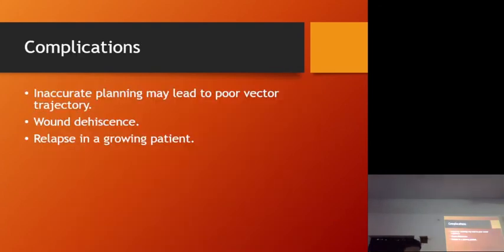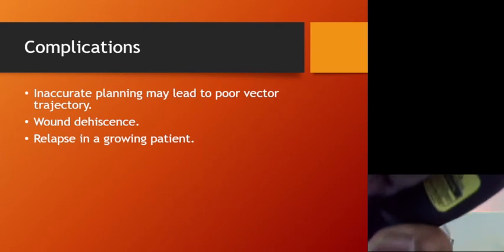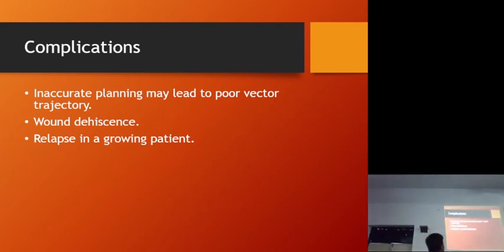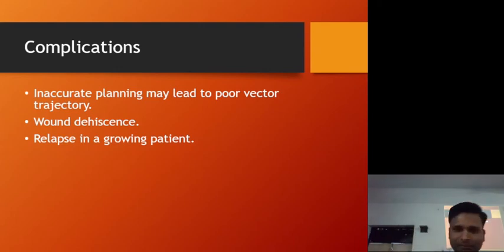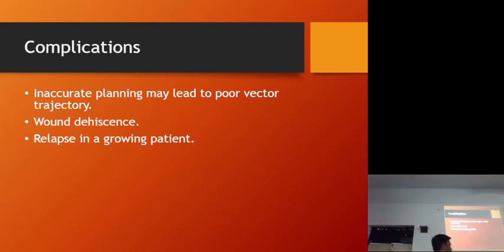Now we come to complications of distraction osteogenesis. The first is improper planning. There is something called vector trajectory — there are three planes. The body region is parallel to the mid-sagittal plane; the parasymphysis region is angulated about 30 to 45 degrees depending on the patient's anatomy; and the symphysis is totally perpendicular to the mid-sagittal plane.